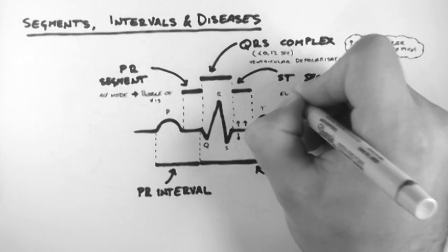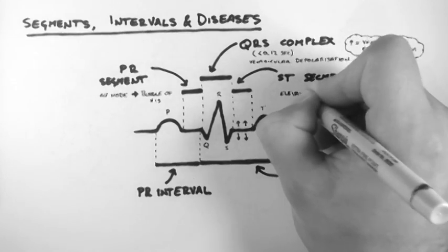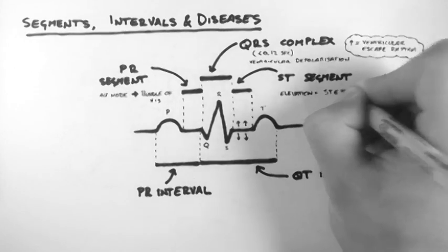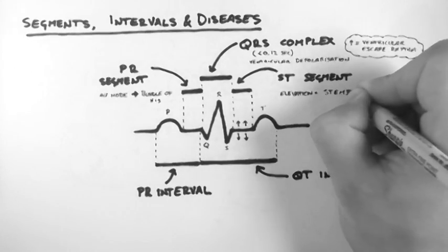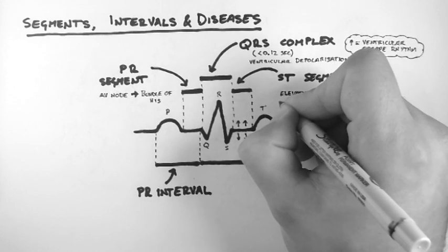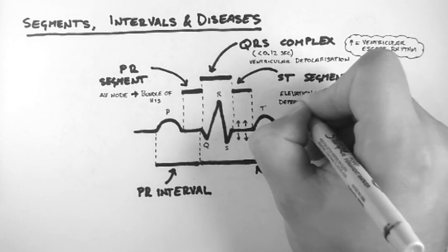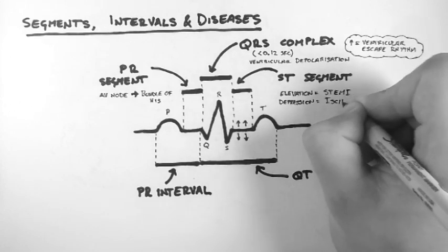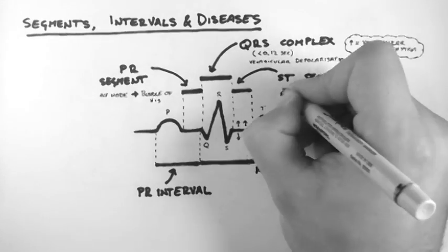Elevation suggests a STEMI, which stands for ST-elevated myocardial infarction, also known as a heart attack. ST segment depression suggests ischemia, which usually presents as chest pain or angina.